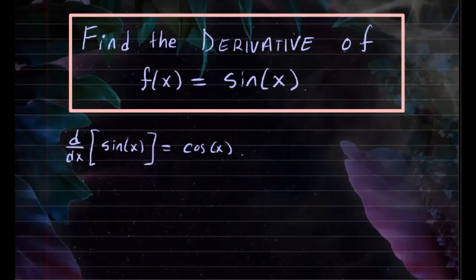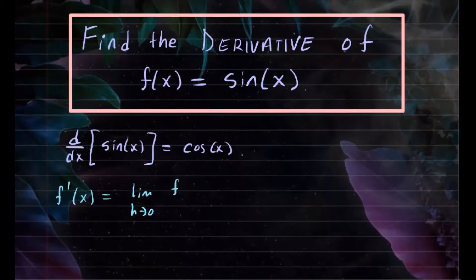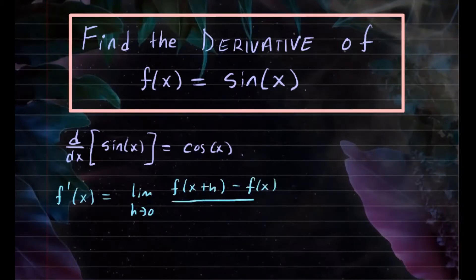So we know by limit definition, f prime of x is equal to the limit as h approaches 0 of f of x plus h minus f of x, all over h.